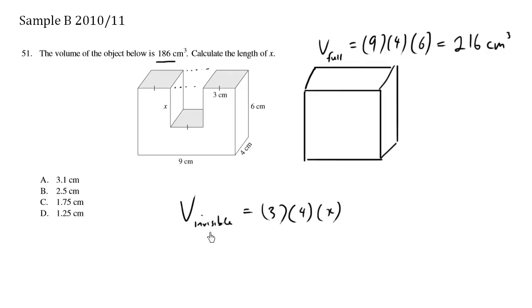Now we know the volume of this invisible area is the difference between these volumes. So it's going to be 216 minus 186 is equals to, 3 times 4 is 12, we have 12x.